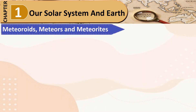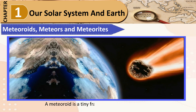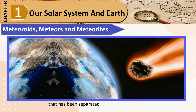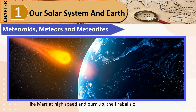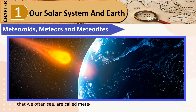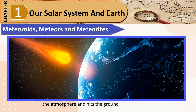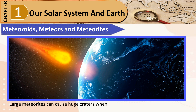Meteoroids, Meteors, and Meteorites: A meteoroid is a tiny fragment of a comet or asteroid that has been separated or detached. When meteoroids enter Earth's atmosphere at high speed and burn up, the fireballs or shooting stars we see are called meteors. When a meteoroid survives a trip through the atmosphere and hits the ground, it is called a meteorite. Large meteorites can cause huge craters when they fall on the Earth and other planets.